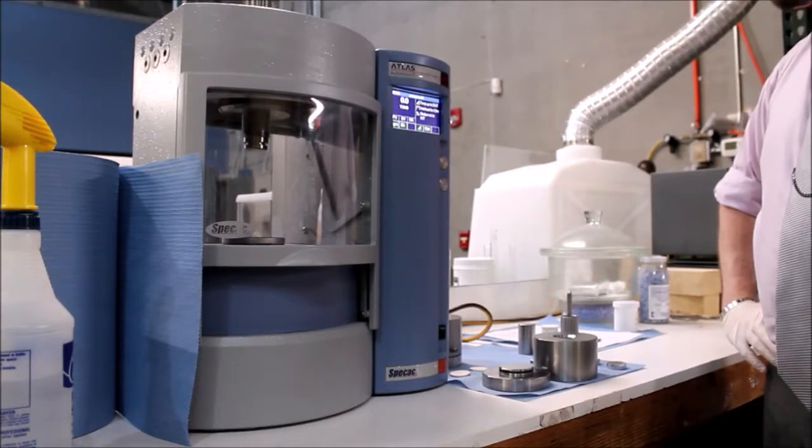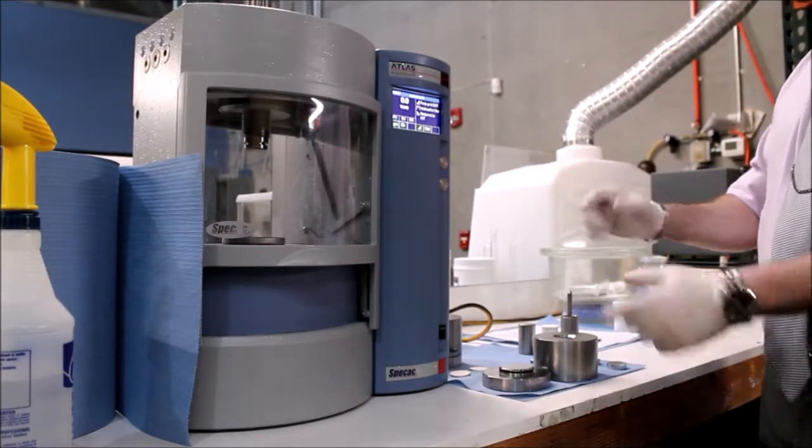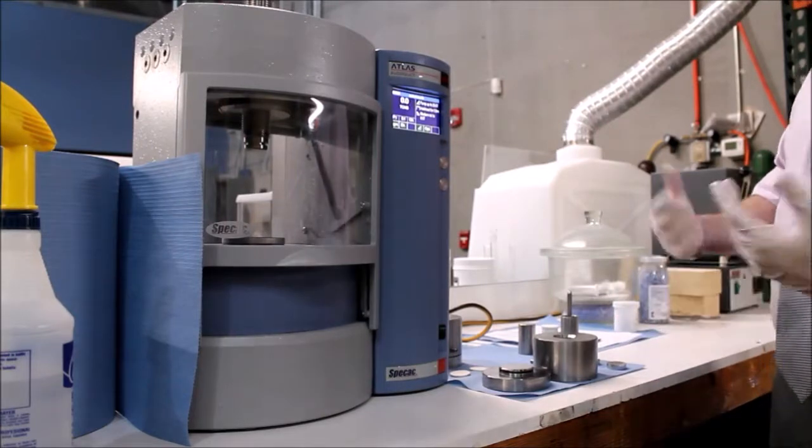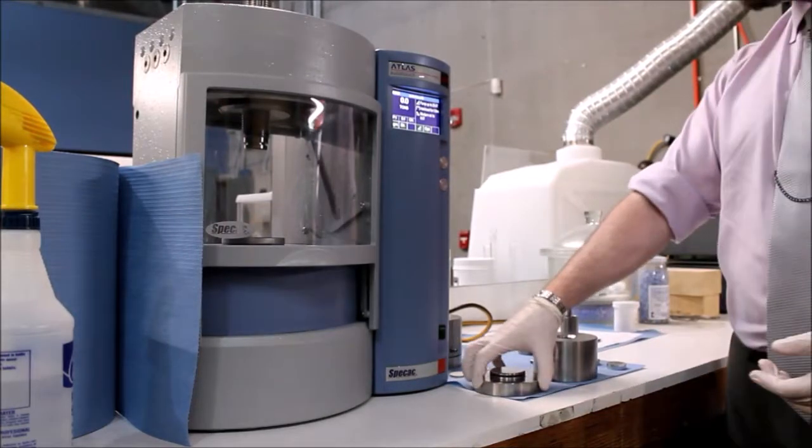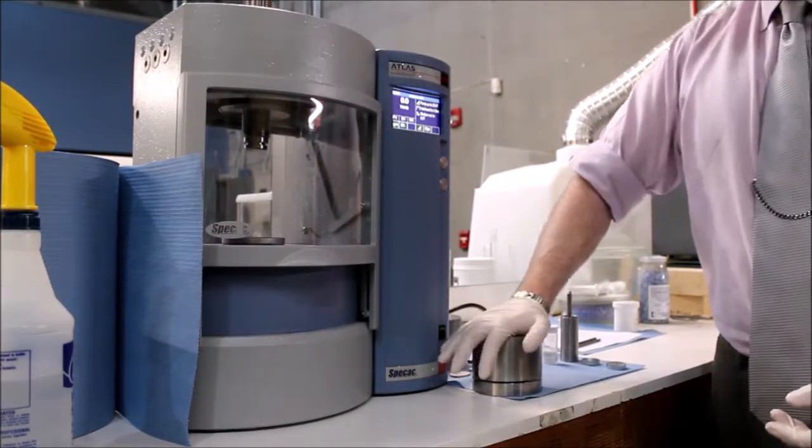Today we will be learning how to make a pellet using a 25-ton autopress and a stainless steel die set. To begin, we place the base onto the bench top and assemble the cylinder body onto the base.